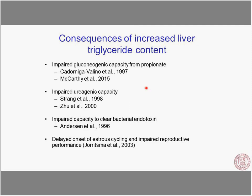When we see more triglyceride content in the liver, we see impaired glucogenic capacity from propionate — one of the major things we want that liver to do. We see impaired capacity to detoxify ammonia to urea, so impaired ureogenic capacity. We have impaired capacity to clear endotoxin, and there are some relationships with reproduction as well. These are associations, but they all represent things we would consider negative outcomes for the transition cow.